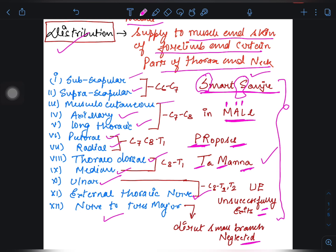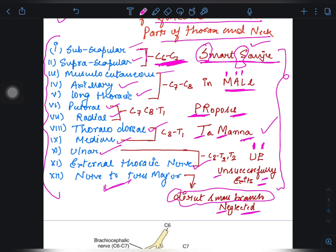U and E. U refers to ulnar, unsuccessfully ulnar initial letter. And then exits, E, E for external thoracic nerve, and nerve to teres major. It is a direct small branch. You can memorize it by neglected. Okay, so Smart Sanju In MALL Proposes Tamanna Unsuccessfully Exits Neglected.